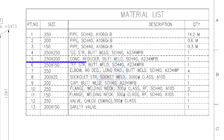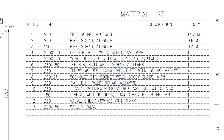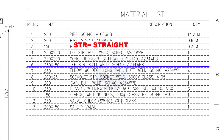Item number 5: 250 into 200 concentric reducer, butt welded, Schedule 40. Quantity is 1. Item number 6: 250 into 150 straight T, butt welded, Schedule 40. Quantity: 1.